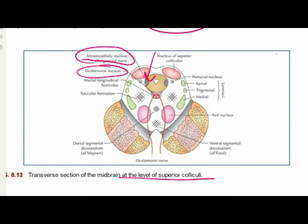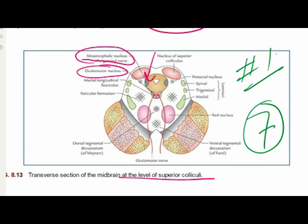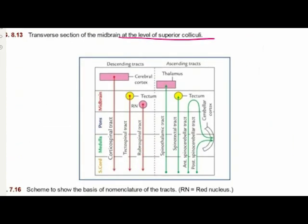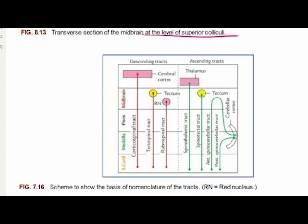These were the seven diagrams of the brainstem cross-sections. You will face a question from these seven either in your internals or externals. The next important question asked is about the ascending and descending tracts.